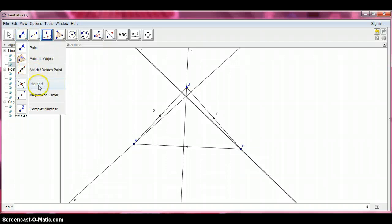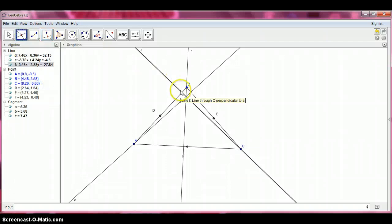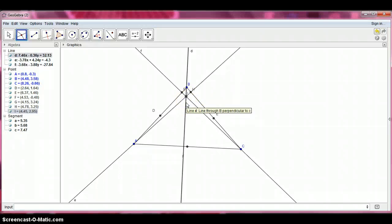So we need to change our point tool to intersect and select the two lines where they all intersect.